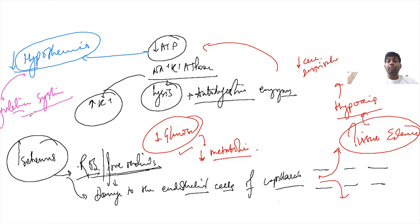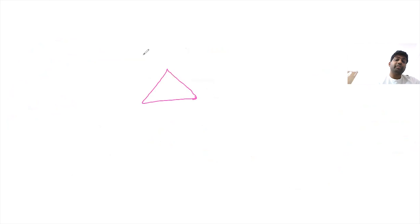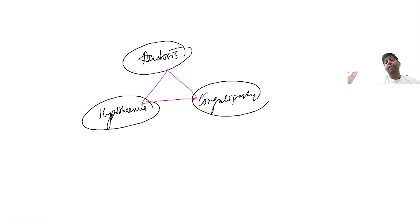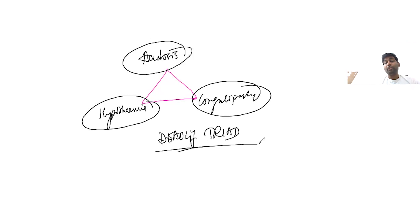The three main concepts in shock are: first, acidosis; second, hypothermia; and third, coagulopathy. This is known as the deadly triad. All three are important and interrelated, and understanding why each occurs and their consequences is the essence of the pathophysiology of shock.